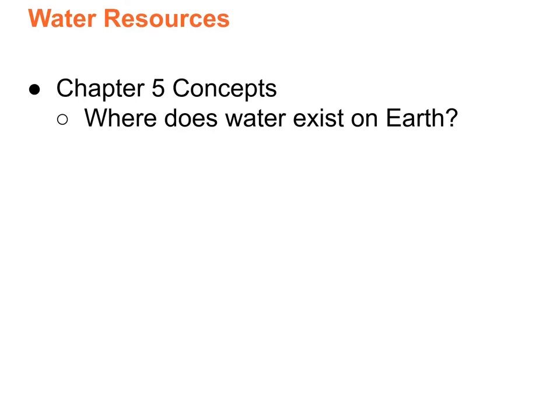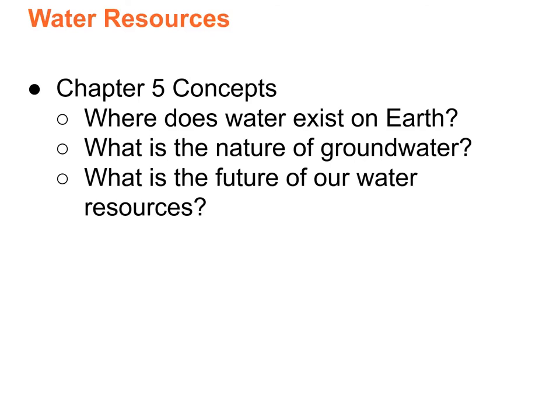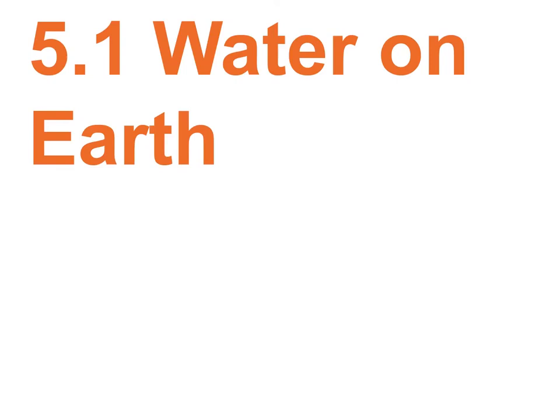Where does water exist on Earth? Here's a spoiler: 97% of it is in the ocean. What is the nature of groundwater? It's in the ground. It's fragile, it's easily polluted, it's impossible to clean, and it's a limited resource. What's the future of water resources? More people, less water.